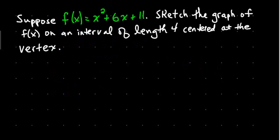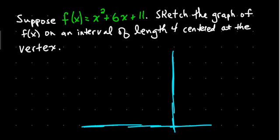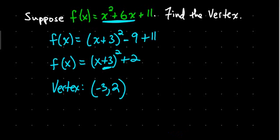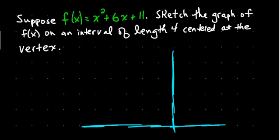Suppose f of x equals x squared plus 6x plus 11. Sketch the graph of f of x on an interval of length 4 centered at the vertex. So, let's do that. I'm just not going to make it all straight line. I'm just going to be sloppy here. Let's say we're here. And so, my vertex was where? Negative 3, 2. Negative 1, 2, 3. 1, 2. And so, I go over. So, now this is taking care of everything.